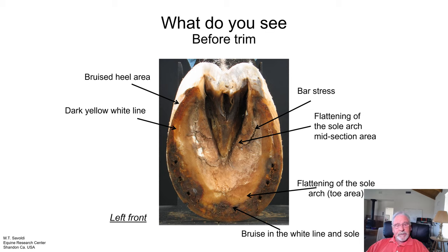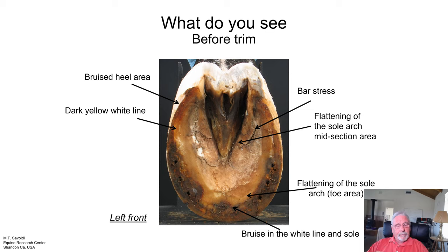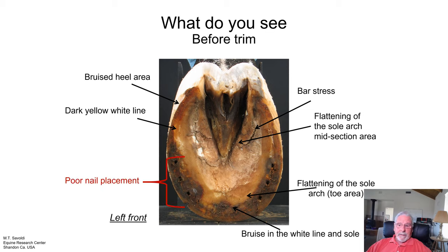If it stays there long enough, the distal border — the sensitive lamina — will scar and get hard. And then that hard tissue can put pressure onto the dermis of the P3 bone and onto bone, actually causing bone remodeling.